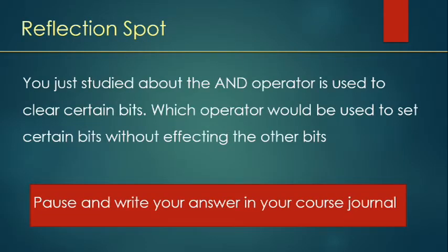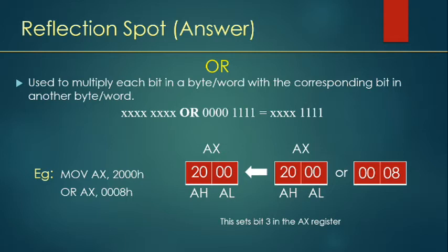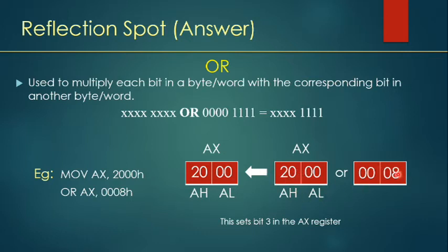Reflection quiz: you have studied the AND operator. Now find an operator that will help you set certain bits without affecting the other bits. Recall your knowledge of digital circuits and think about this. The answer is the OR operator. It sets the bits you want to set without affecting any other bits. For example, ORing AX (which has 2000) with 0008 gives the result 2008.